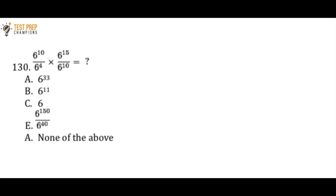So this next question — let me read it out in case it's hard to see on your screen. I have six raised to the power of 10 divided by six raised to the power of 4, times six raised to the power of 15 divided by six raised to the power of 10. I'd like you to try to do this one without a calculator — using a calculator here probably won't be that helpful. If you just have no idea how to do this, don't worry, because I'm going to explain it. Pause the video, give it a try, and then we'll go over the answer.